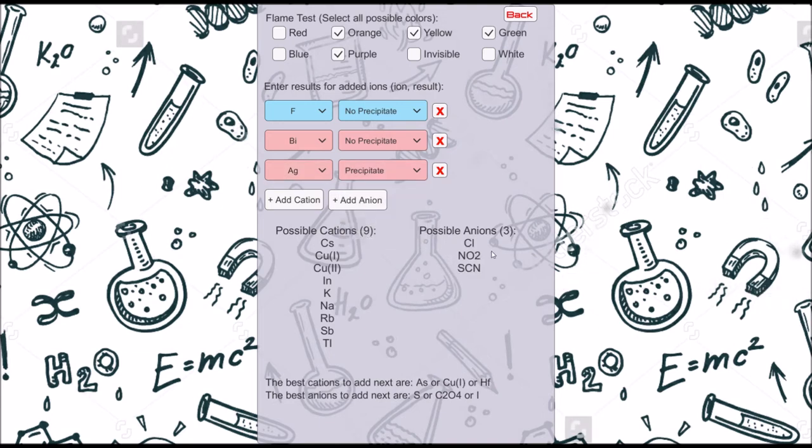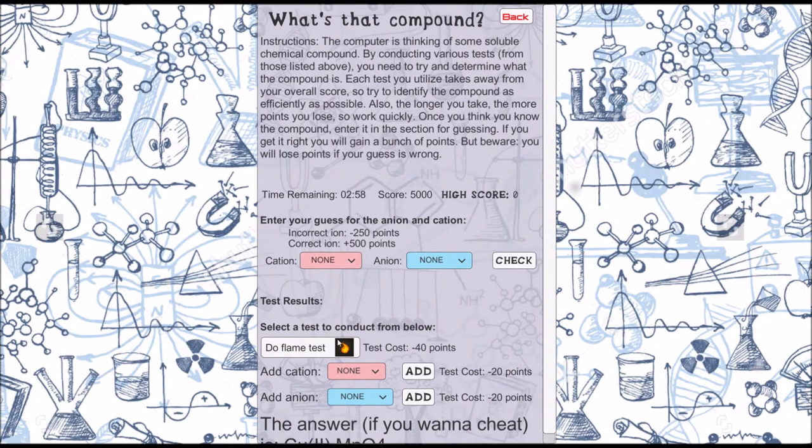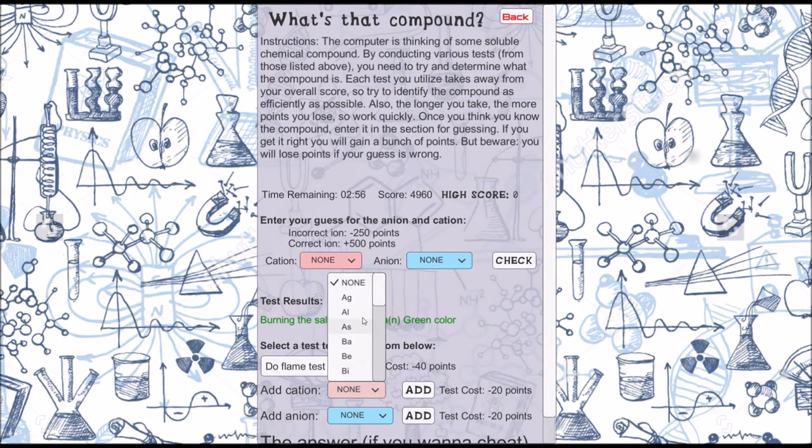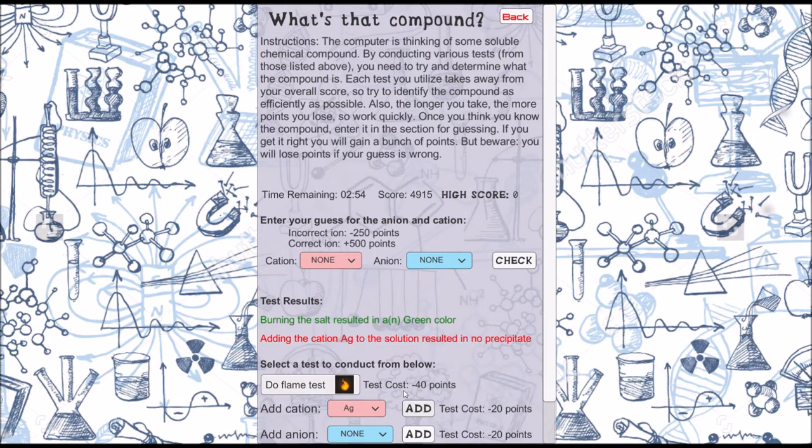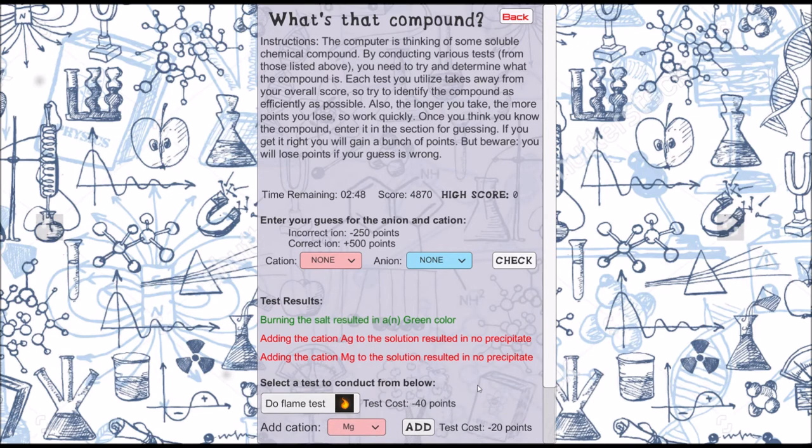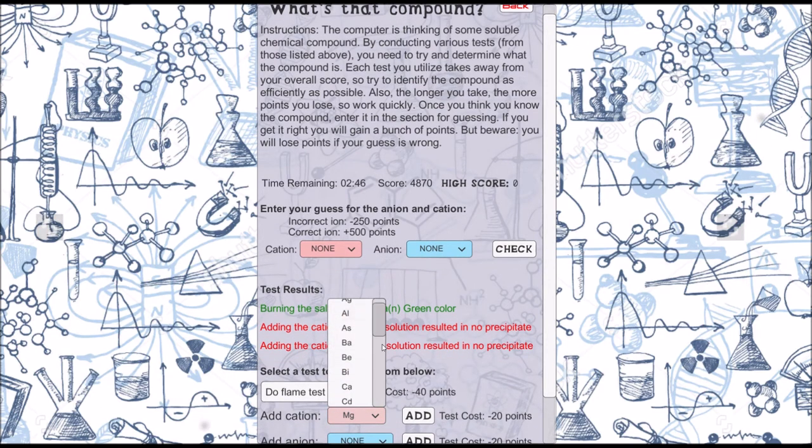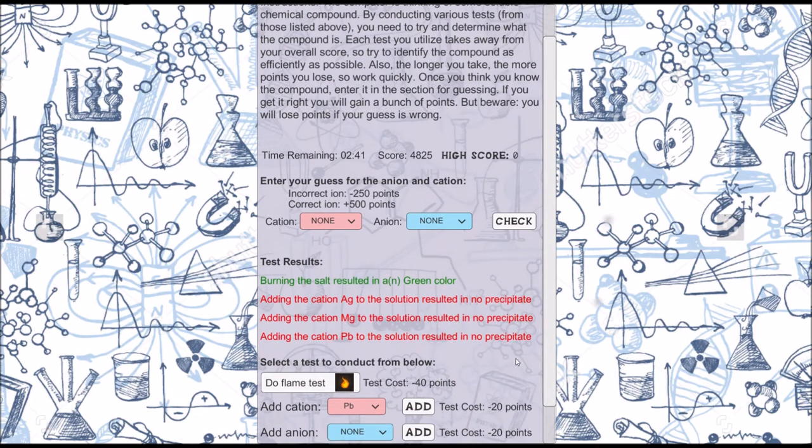I have designed a game mode for this app, which allows schools who do not have the funds to purchase the expensive equipment or compounds required for qualitative analysis to still teach students how the process works in a fun and interactive way. This is important because qualitative analysis is a key part of chemistry, but not knowing how the procedure works puts aspiring chemists at a disadvantage compared to their peers.